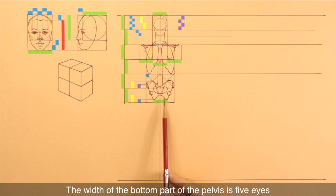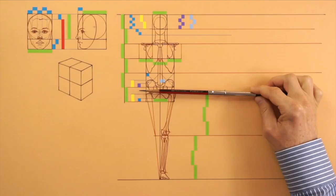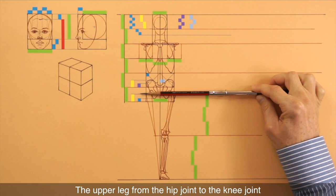The upper leg from the hip joint to the knee joint is equal to three measuring units. The same measurement applies to the lower leg from the knee joint to the ground.